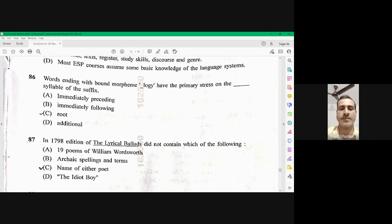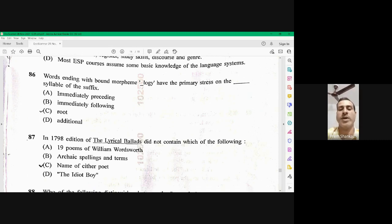In 1798 edition of the radical blood did not contain which of the following. It was published anonymously. So name of the either poet was totally missing. 87 HB.